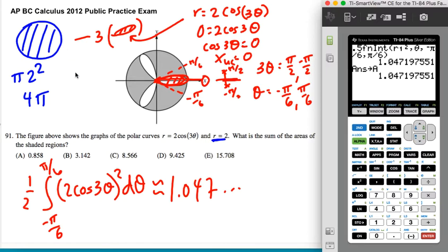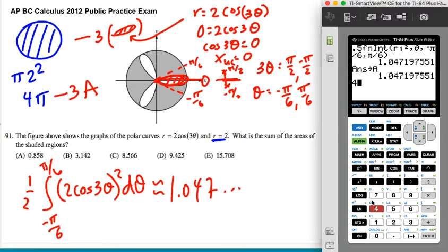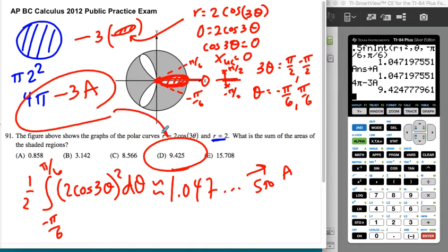So what I want, my answer is going to be 4 pi minus 3 times the thing I just called A. So 4 pi minus 3 times that area that I just stored as A. All right, and there we have it, and that's my answer. It's D. So again, the easiest way to do it was to find the area of one petal and recognize I'm subtracting three of those petals, which is how I got D.